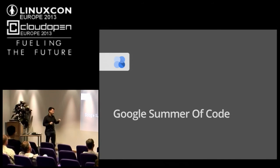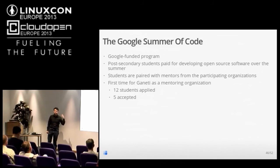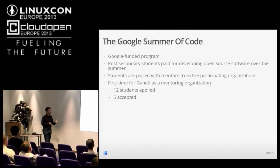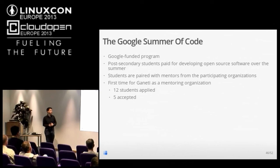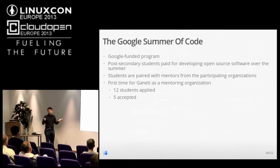To conclude, I'll give a small outlook of what happened during the Google Summer of Code for Ganeti as a mentoring organization for the first time. The Google Summer of Code is a Google-funded program for post-secondary students who want to work on open source software over the summer, getting paid fairly well, paired with a mentor from participating organizations. Even though we are Google, we were not part of the GSoC program — we had to apply like every other open source project, going through the same selection process. Twelve students applied, we had five slots, and we managed to accept five students.